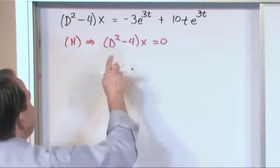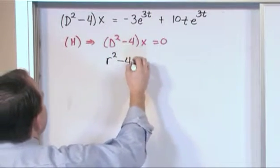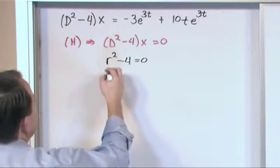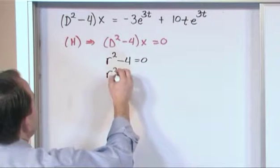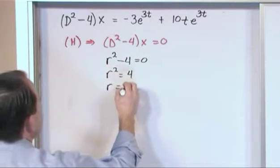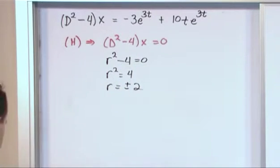All right, so we do that by taking what's in here and convert it to this polynomial, r squared minus 4 is equal to 0. And we can just simply go r squared is equal to 4 and take the square root. So we'll say r is equal to plus or minus 2. So we have two roots, positive 2 and negative 2.